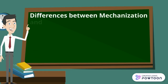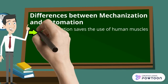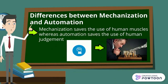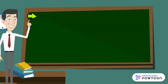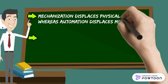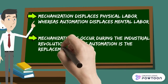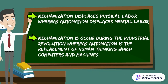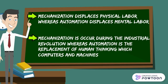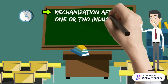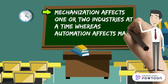Moving on to the differences between mechanization and automation in manufacturing industries: mechanization saves the use of human muscles, meaning human labor. Mechanization displaces physical labor — the effort needed to run manufacturing operations — whereas automation displaces mental labor, accommodating programming in order to run robots. Mechanization occurred during the Industrial Revolution, while automation is the replacement of human thinking with computers and machines. Furthermore, mechanization affects one or two industries at a time, whereas automation affects many industries at a time.